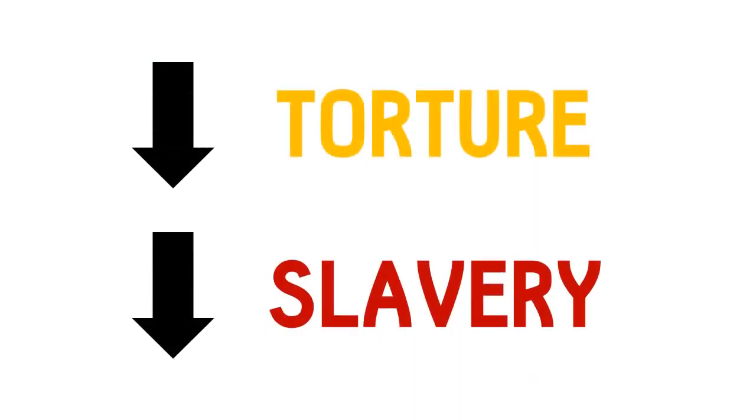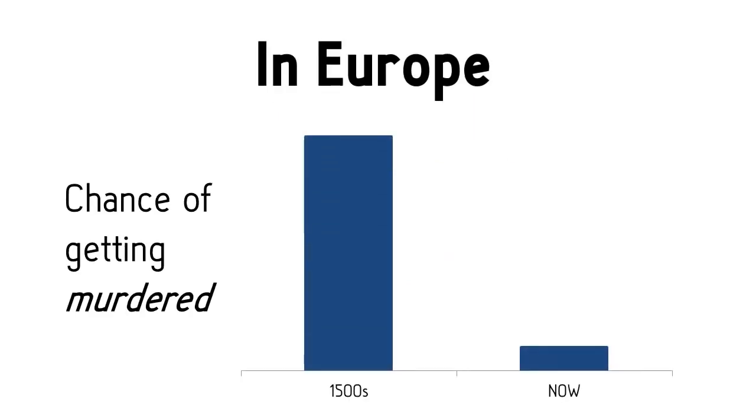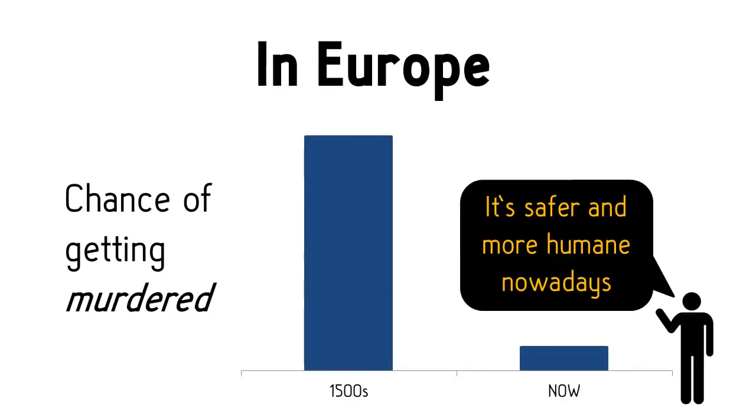Then think about the steps taken to abolish torture and slavery. Also consider the fact that in Europe, you were 10 times more likely to be murdered in the 1500s compared to now. The reality is, we are in a much safer and more humane society than ever.